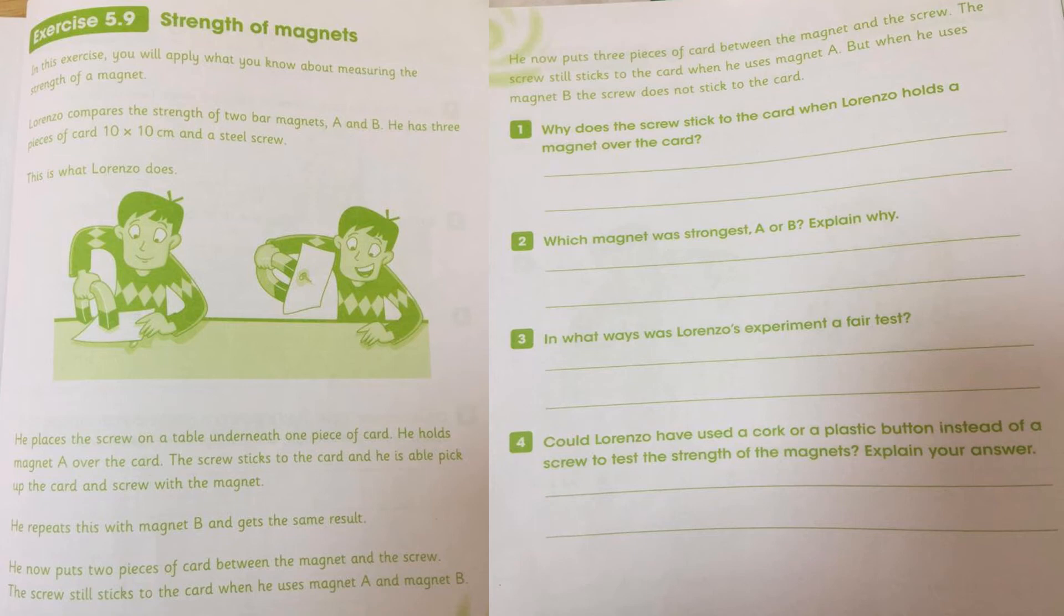And they are using different types of the cardboard sheets, the layers of the cardboard sheets. So when we attract with A and B, they are attracting with one sheet, it's okay. With two sheets, it's okay. Both attract the screw. But with third sheet, only the A, magnet A, can attract this screw. But magnet B is not attracting that one. So it means magnet A is more stronger than the B.